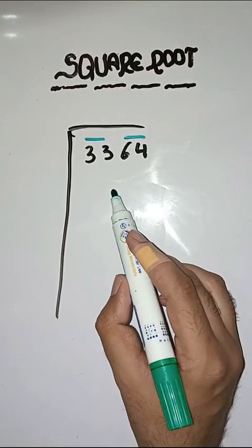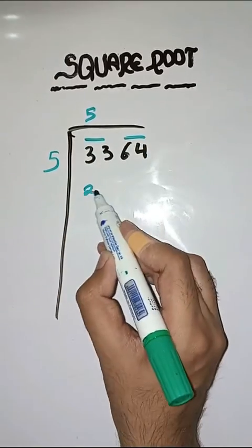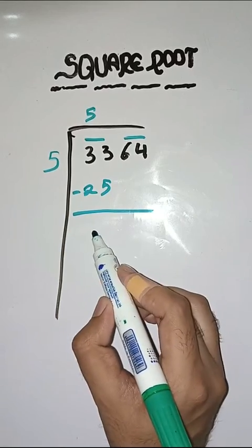So first we have to solve 33. So we take a number 5. 5 fives are 25. Minus करेंगे, हमारे पास क्या आएगा? 8.